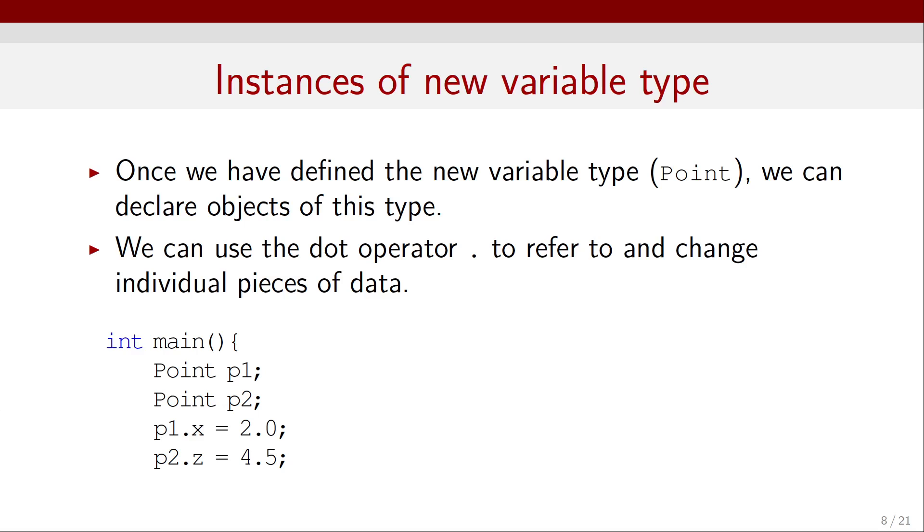Once we have defined the new type of variable, Point, we can declare objects of this type. And we can also use the dot operator to refer to and change individual pieces of data.